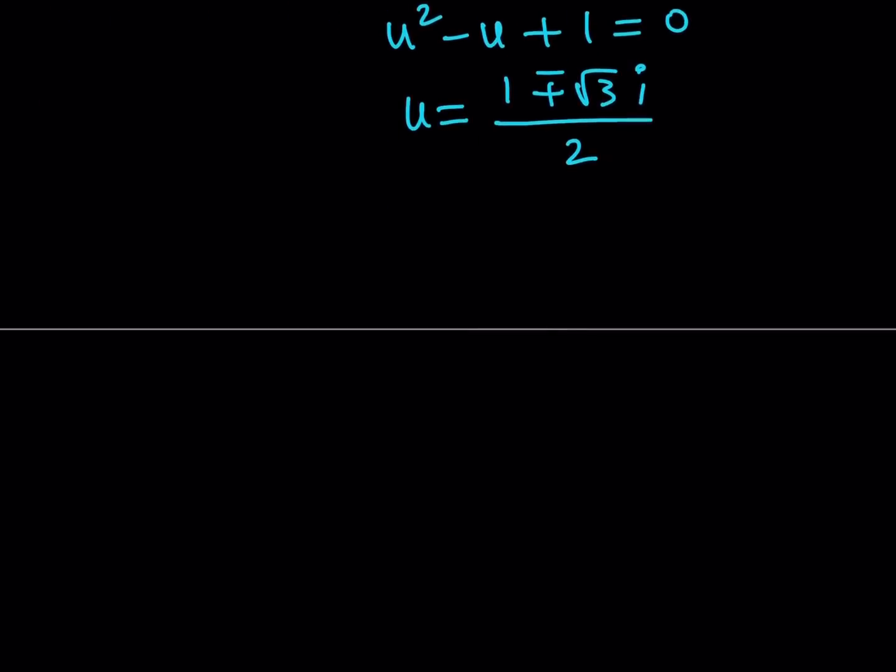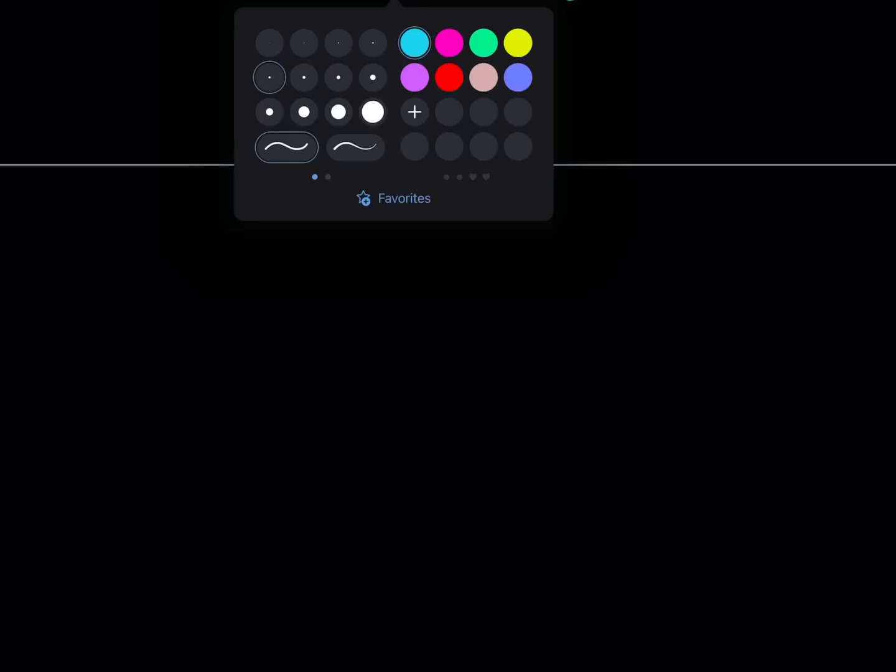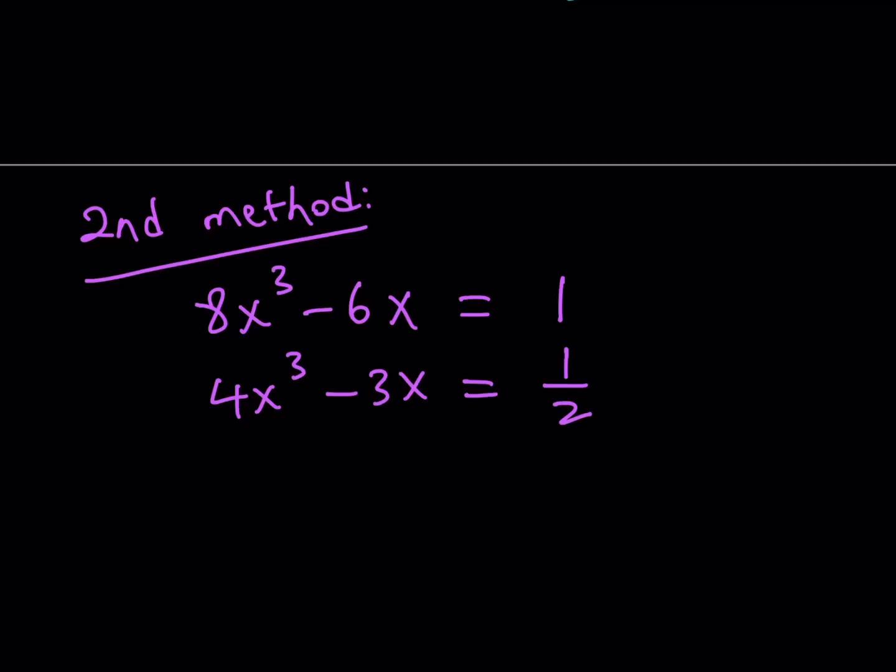Now, let's go ahead and talk about our second method. Our second method involves a different approach. Of course, these two methods have some type of intersection. But here's what it is. If you look at our original equation, 8x³ - 6x - 1 = 0. How about I put the 1 on the right-hand side? And then divide both sides by 2. Now, you might be asking, why is he doing all that? How would you know what to do in this case? Well, if you're familiar with trigonometry, you will probably think about this.